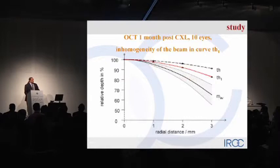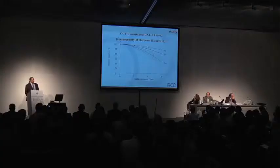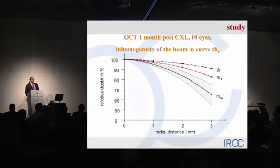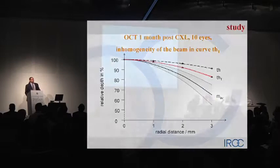Looking at the OCTs of 10 eyes, there's inhomogeneity in the beam and the curvature, and a difference between the amount of cross-linking in the center versus the periphery. If you do some calculations, you identify that we get about 25% less cross-linking in the periphery — that means 25% less light intensity in the periphery — over a radial distance of about 3 millimeters, which corresponds to where Renato Ambrosio found the weakest point. So in order to create a homogeneous cross-linking effect, we have to change from a top-hat profile of constant illumination to doing more cross-linking in the periphery — 3 millimeters away from the center, the light intensity needs to be increased by about 25%.